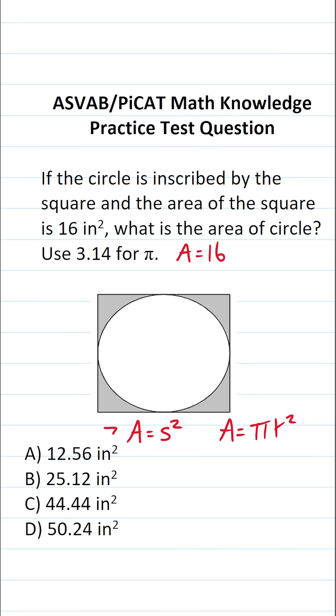So in this area formula for the square, I can replace A with 16. And that enables me to solve for s by taking the square roots of both sides of the equation. These cross out, leaving me with s over here, the square root of 16 is 4.